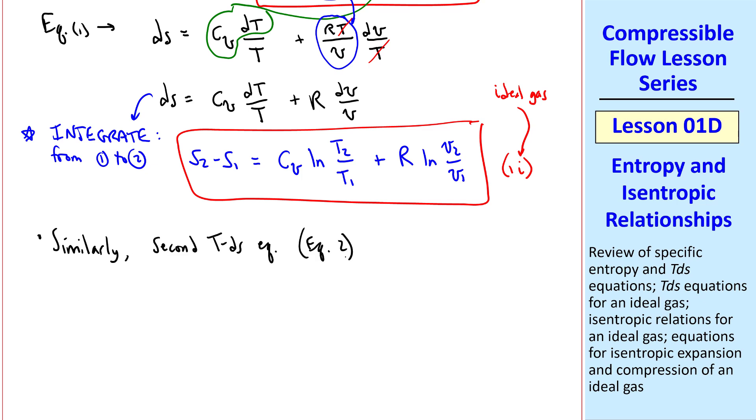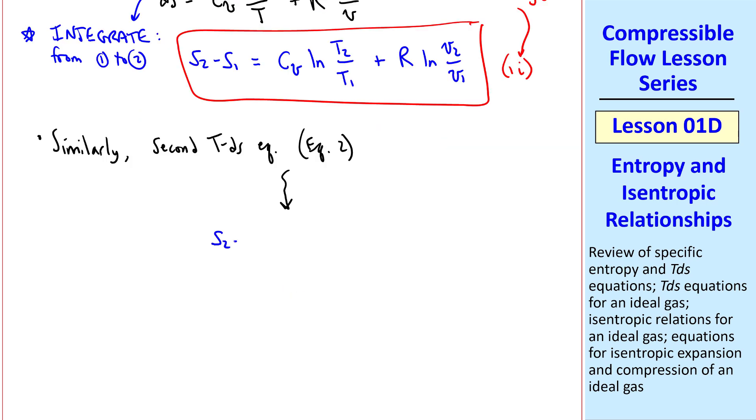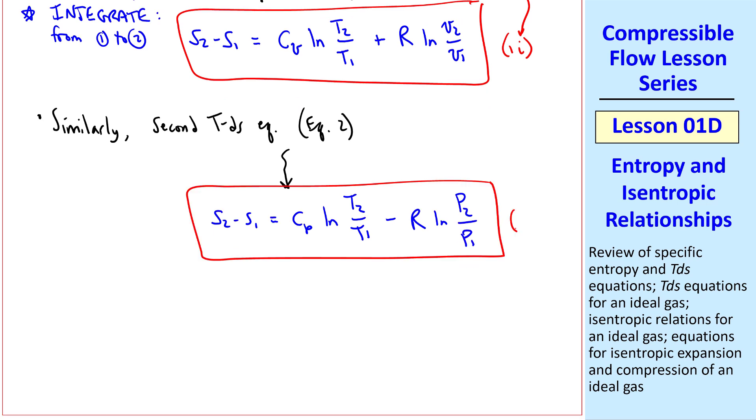Similarly, the second TDS equation, with similar algebra, and this means some algebra, we get s2 minus s1 equals cp natural log of t2 over t1, minus r natural log p2 over p1. And I'll call this equation 2i, for ideal gas. These are the two TDS equations that we'll use most often. And you pick the one to use, based on convenience, basically, whichever one fits the equations that you're working with, and is most helpful.